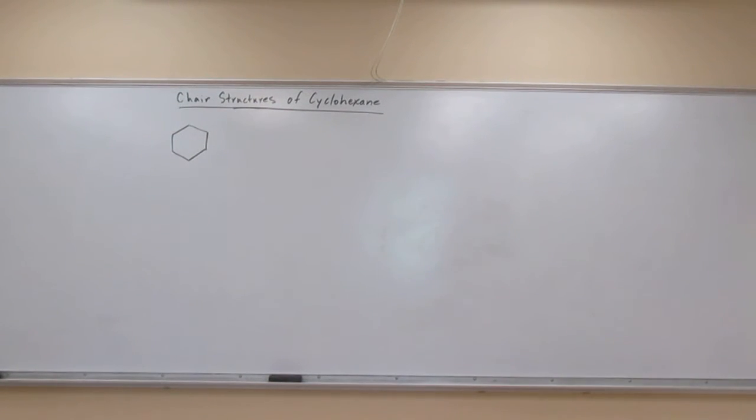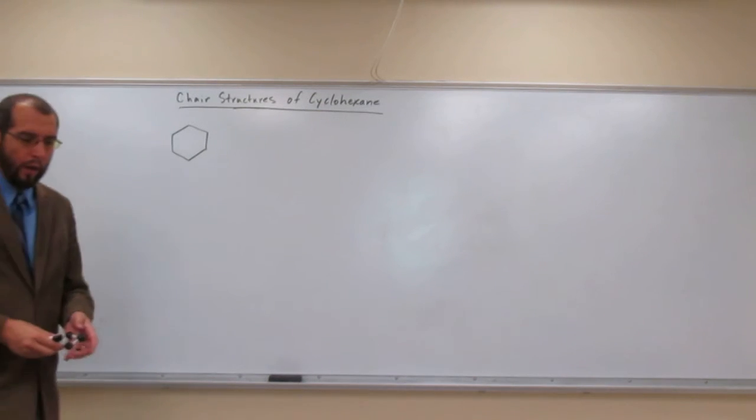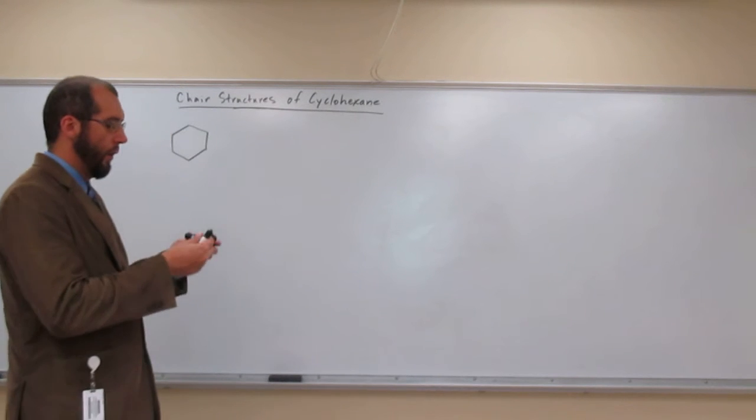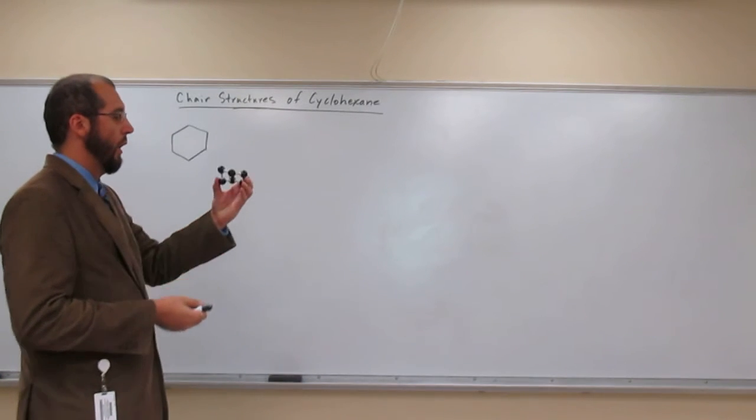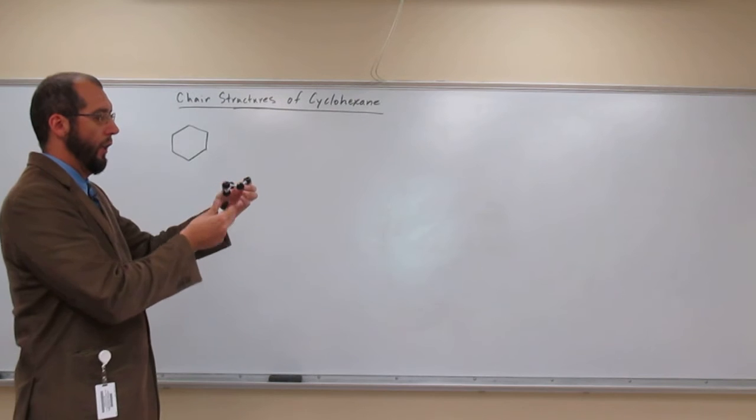Okay, so now I'm going to show you how to draw the carbon ring of the two chair structures of cyclohexane. In other words, just the ring portion, just the carbon portion like what I have here.